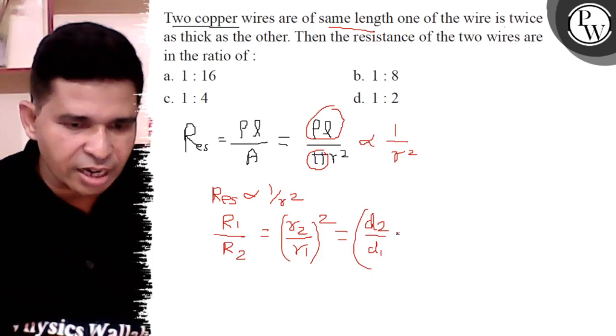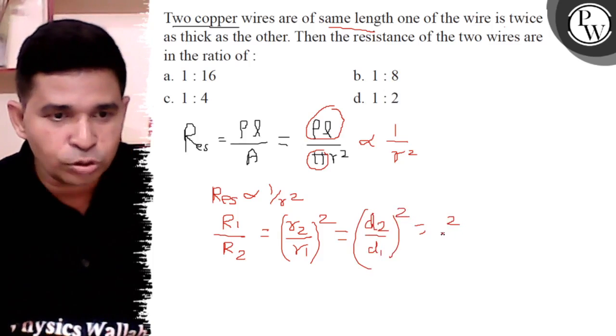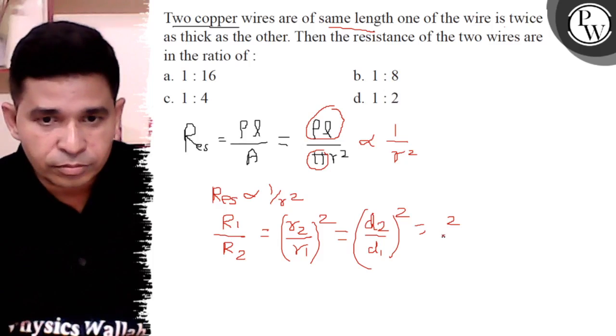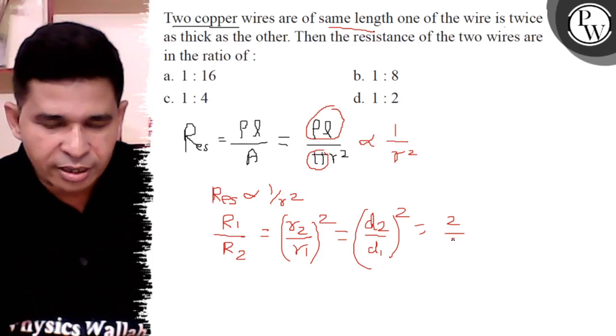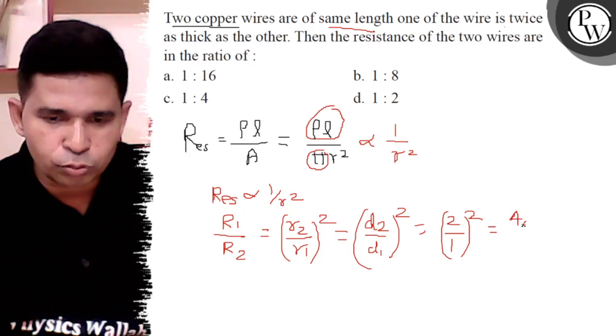D2 by D1, whole square, or it is two D2 upon one. So it is the whole square, so it is four is to one.